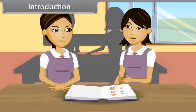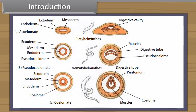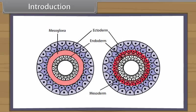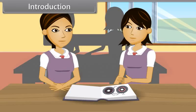On the basis of body cavity, animals are either acoelomates, e.g. coelenterates and flatworms, or pseudocoelomates, e.g. nematodes. According to presence and number of germ layers, animals are either diploblastic, e.g. sponges and coelenterates, or triploblastic, e.g. flatworms to mammals. We will now discuss some important characters and examples of various phyla of Kingdom Animalia.